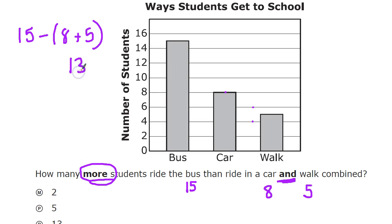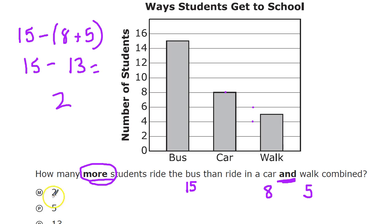If you don't trust me, check it in your calculator — that's fine. Now I just need to see how many more students are in the bus group. Comparing fifteen and thirteen, the best way is to subtract: fifteen minus thirteen equals two. My answer is M, and I'll put an M there to remind myself when carrying it over to the answer sheet so I don't make a mistake — I used to do that all the time when I was young.